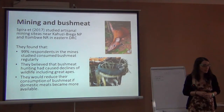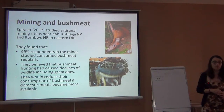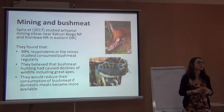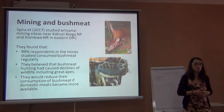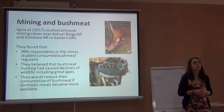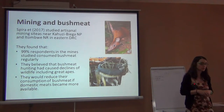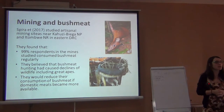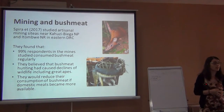A study done in Kahuzi-Biega National Park and Itombwe Nature Reserve near Congo showed that part of the problem was mining. There's big mining in the area — gold, coltan, and other minerals — and these workers spend the whole day in the mine and are paid quite a lot of money. Now they want to eat meat, not just rice and beans. But with tsetse fly in the area, nobody's growing cows, so the meat comes from the forest.